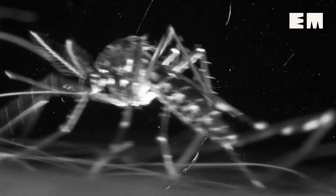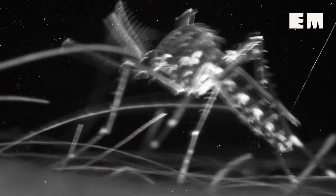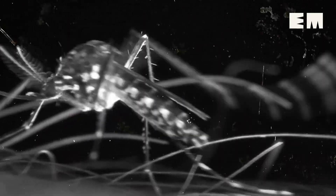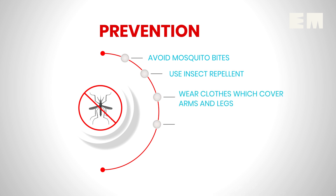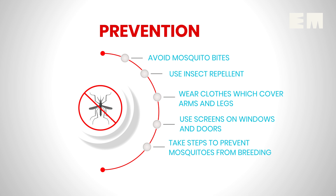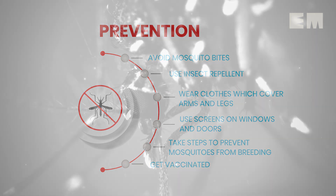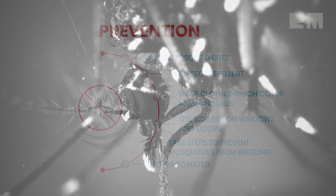The most effective way to prevent infection from Japanese Encephalitis virus is to avoid mosquito bites. Use insect repellent. Dress in clothing that covers arms and legs. Use screens on windows and doors. Take steps to prevent mosquitoes from laying eggs in or near water. Get vaccinated against the infection before going to an area where there is a risk of catching the disease.